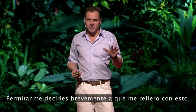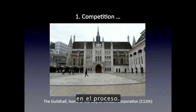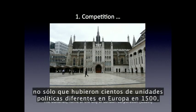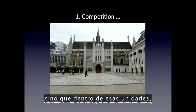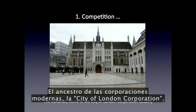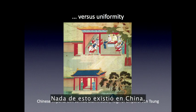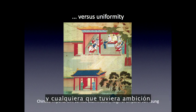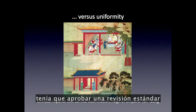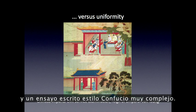Competition means not only were there a hundred different political units in Europe in 1500, but within each of these units there was competition between corporations as well as sovereigns. The ancestor of the modern corporation, the City of London Corporation, existed in the 12th century. Nothing like this existed in China, where there was one monolithic state covering a fifth of humanity, and anyone with any ambition had to pass one standardized examination which took three days and was very difficult.